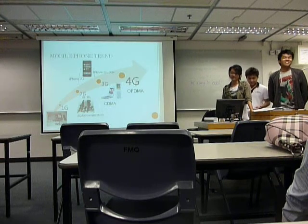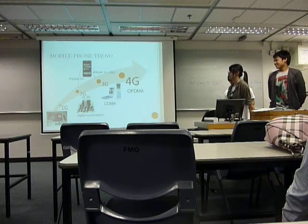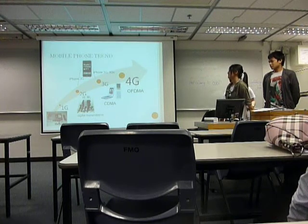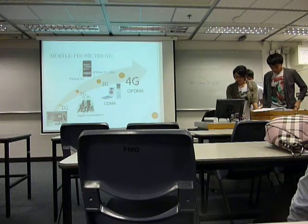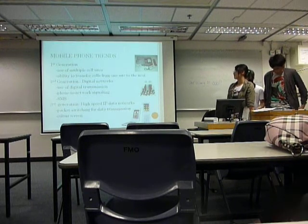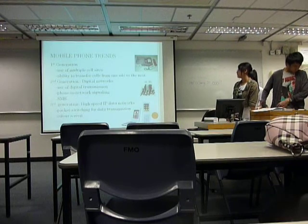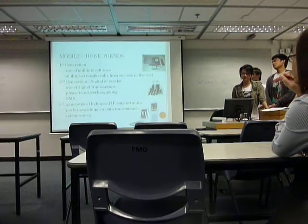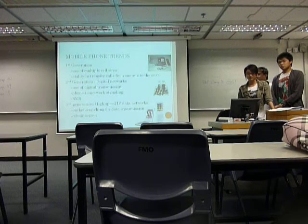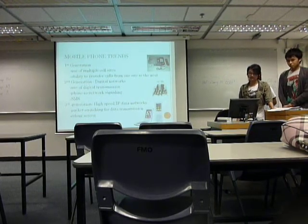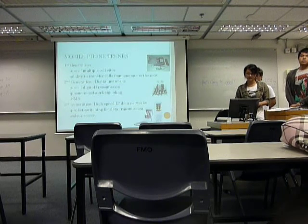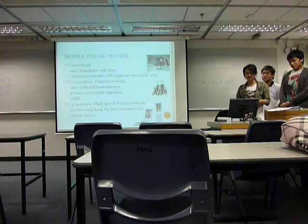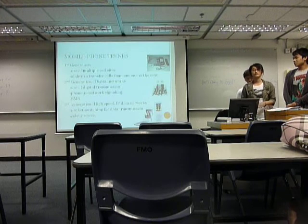Here is the mobile phone trend, from the first generation which used analog transmission, and then the second generation using digital transmission. We are actually in the middle of 3G and 4G. For the first generation, it used analog transmission as well as audible sound. For the second generation, the new features include the ability to send SMS as well as phone-to-network signal. The major difference between first and second generation phones is that second generation phones use digital transmission instead of analog.